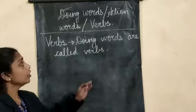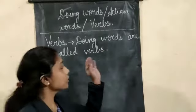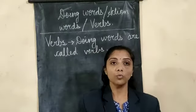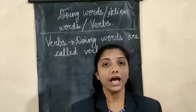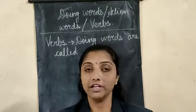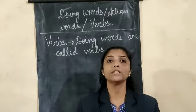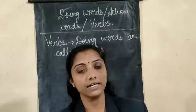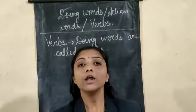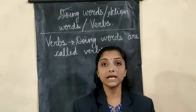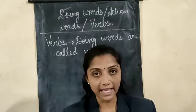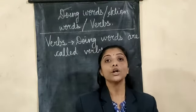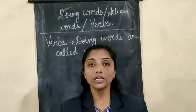So, doing words or action words are called as verbs. I hope all have understood — we have also dealt with this previously, so I think you are clear with the concept. Now we are going to learn a new concept: where to add S and where not to add S to the verbs.